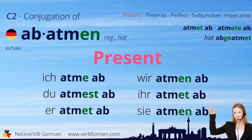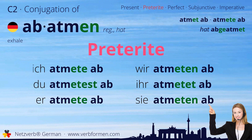Next up is the preterite. Ich atmete ab. Du atmest ab. Er atmete ab. Wir atmeten ab. Ihr atmetet ab. Sie atmeten ab.